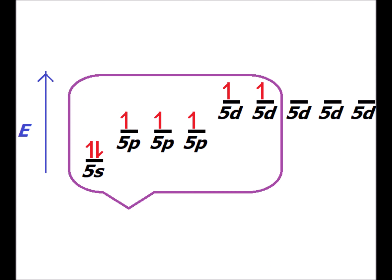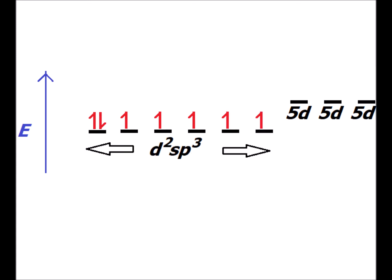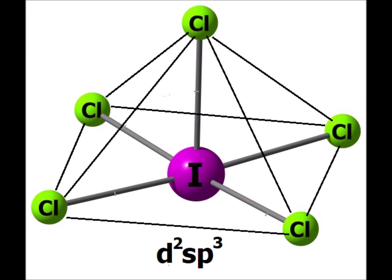If another 5p electron is promoted to an empty 5d orbital, we now see a situation where iodine would be able to form five bonds because it has five half-filled orbitals. So let's imagine that these six filled or half-filled orbitals are hybridized on iodine. The results are six iso-energetic d²sp³ hybridized orbitals on iodine. An example of such a compound is iodine pentachloride, which has a square pyramidal structure — we can imagine it as an octahedron where one position is held by the lone pair on iodine.